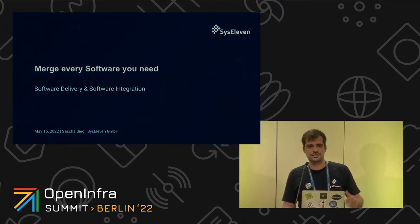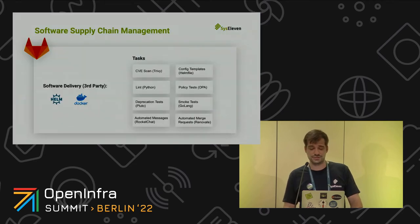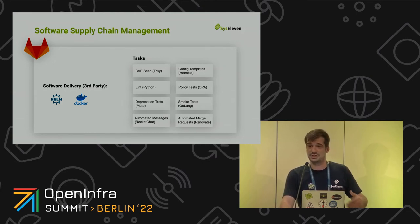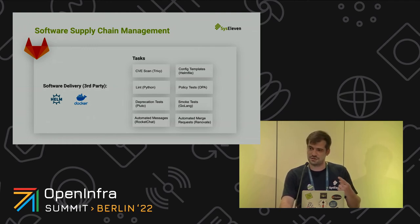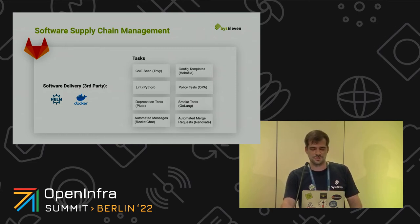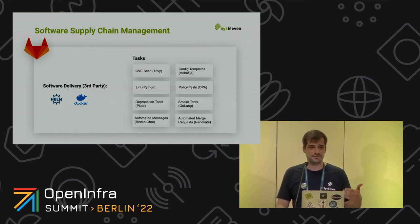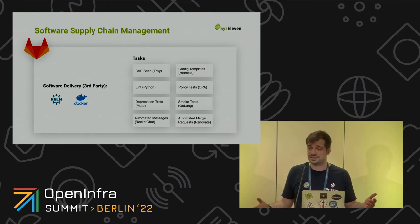We're going to talk about the software supply chain toolchain and what kind of tools we use. The basic layer for our pipeline is GitLab as the Git repository, and GitLab CI as the environment to run CI/CD pipeline tasks. We always expect software delivery to have two things: the configuration and the actual package — in this case for Kubernetes that's Helm charts or Helmfiles and Docker images. Then we have different tasks: CVE scans of Docker images, config templating for Helm files for individualization, policy testing, deprecation testing — all of this has to be done before going to production.